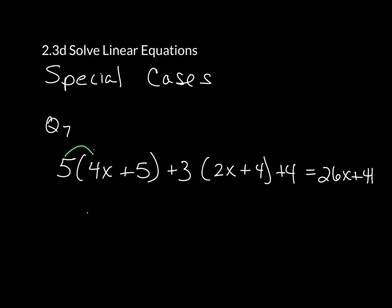Now first thing obviously is to go through and distribute both of these pieces. When you go through and distribute this, you are going to have 5 times 4x, which is going to give you 20x, and then you'll have 5 times 5, plus 25.